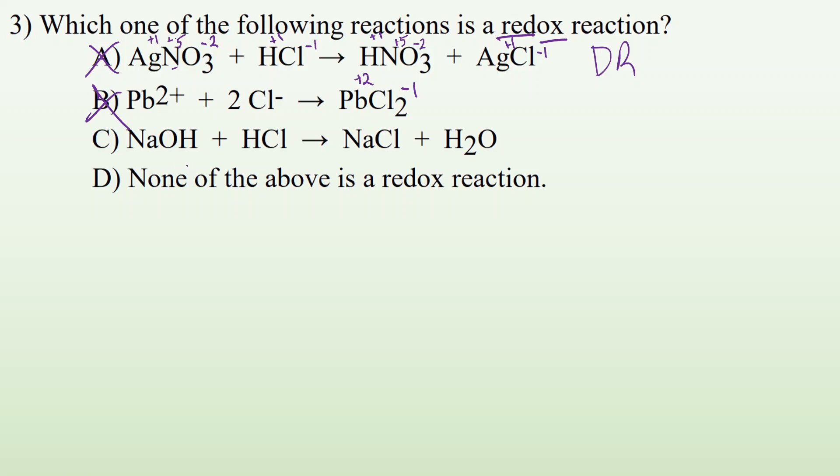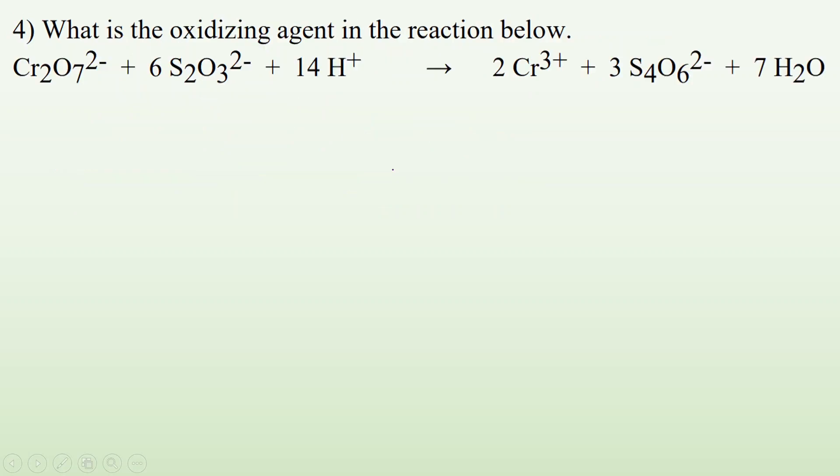Alright. If we take a look at C, NaOH plus HCl gives me NaCl and H2O. It's going to be the same thing. Hydrogen here is plus one. Oxygen's minus two. Sodium's going to be plus one. Hydrogen here, plus one. Chloride minus one. And it's the same thing on the other side. Nothing has changed oxidation numbers. So boom. Answer is going to be D. None of the above is a redox reaction.